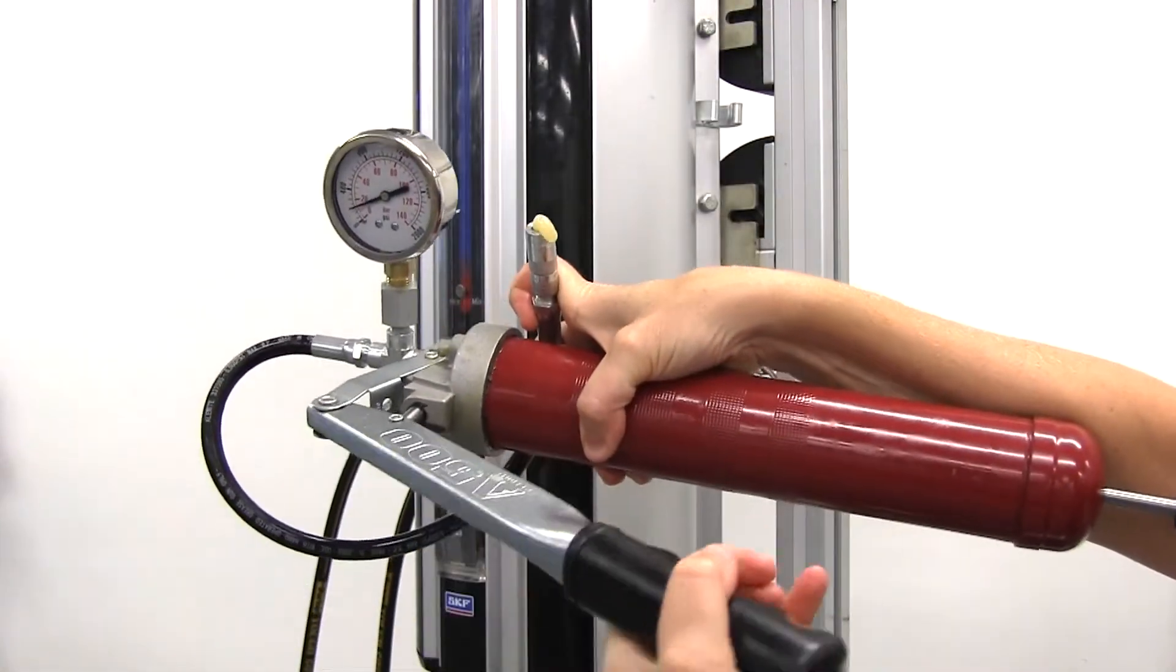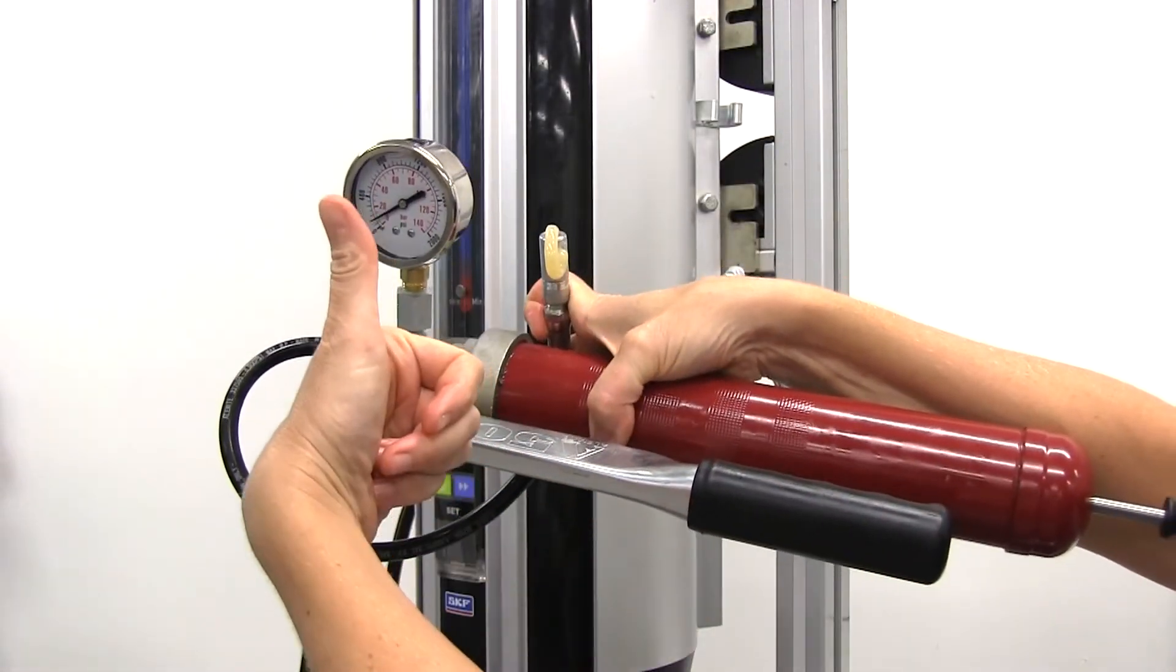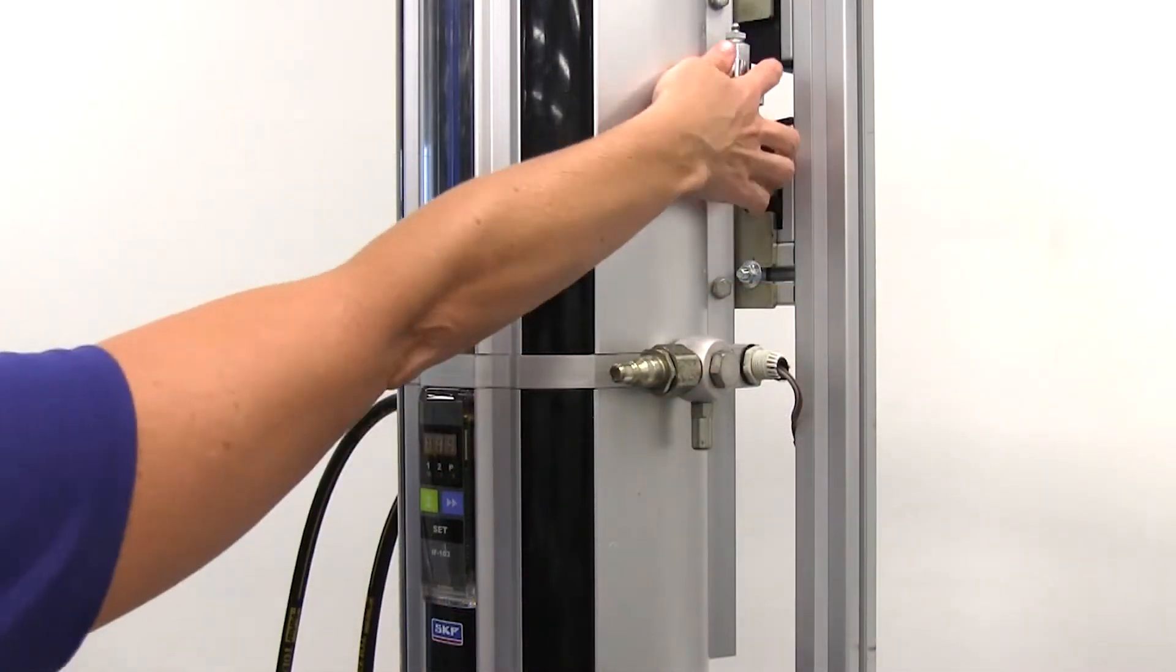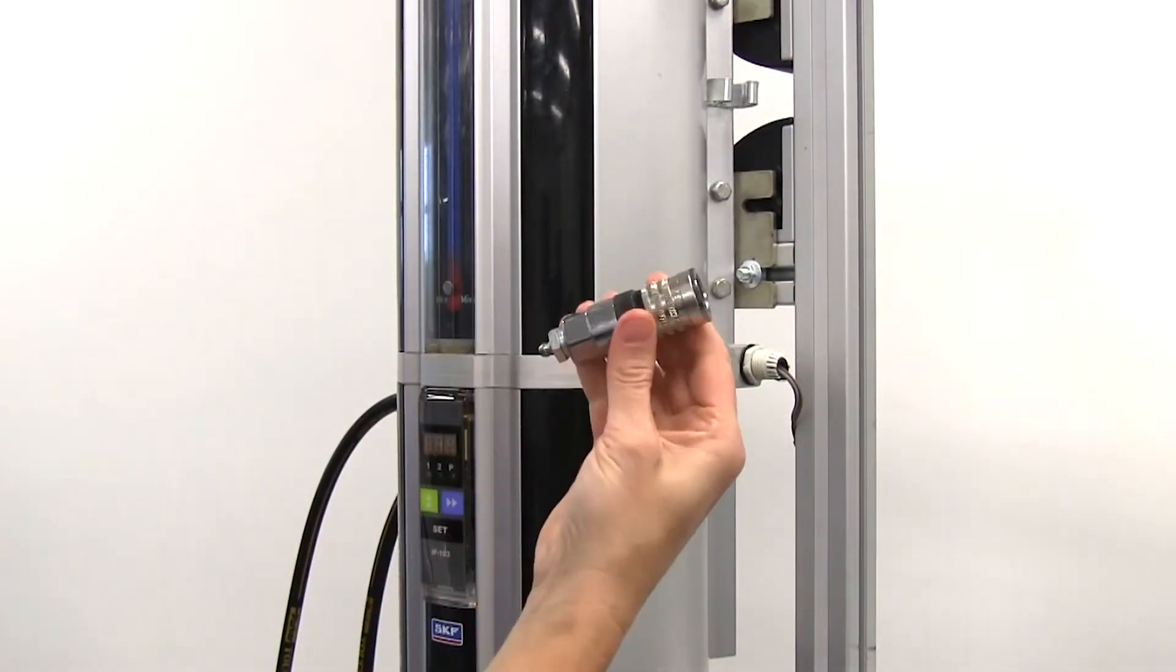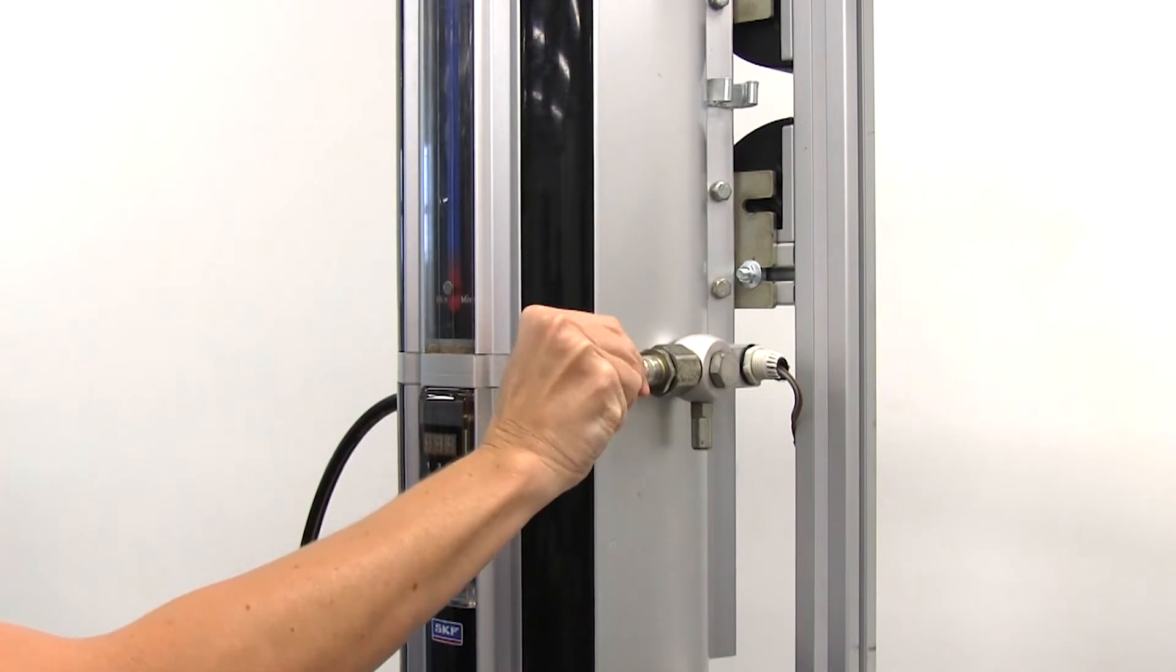Test the grease gun or pump to ensure it's working. Connect the grease gun or pump to the fill port using the female quick disconnect fitting provided with the control unit.